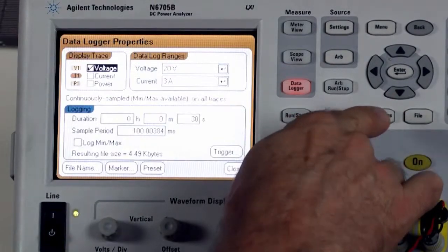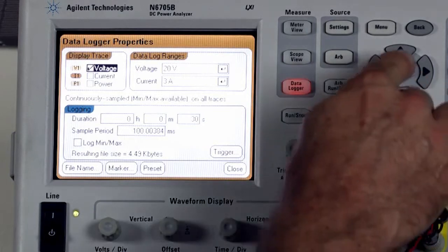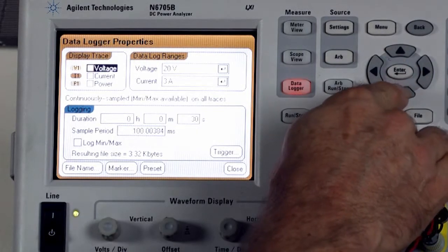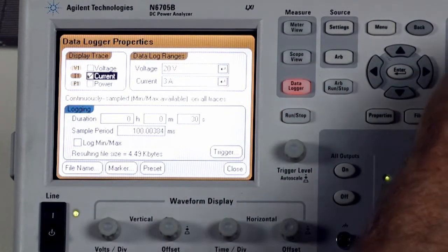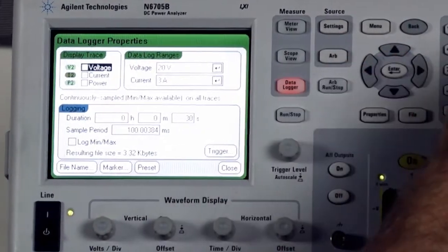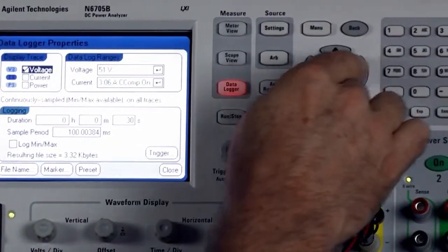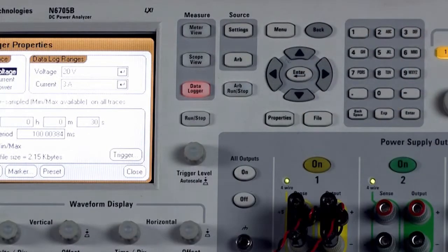By default, the data logger sets voltages to be displayed but I want to look at current of the device, so I'm going to toggle remove voltage and set current. I have two other SMUs in there that are also set for voltage and I want to make sure that those are turned off, so I'll turn those off and we'll go back to our data logger properties.